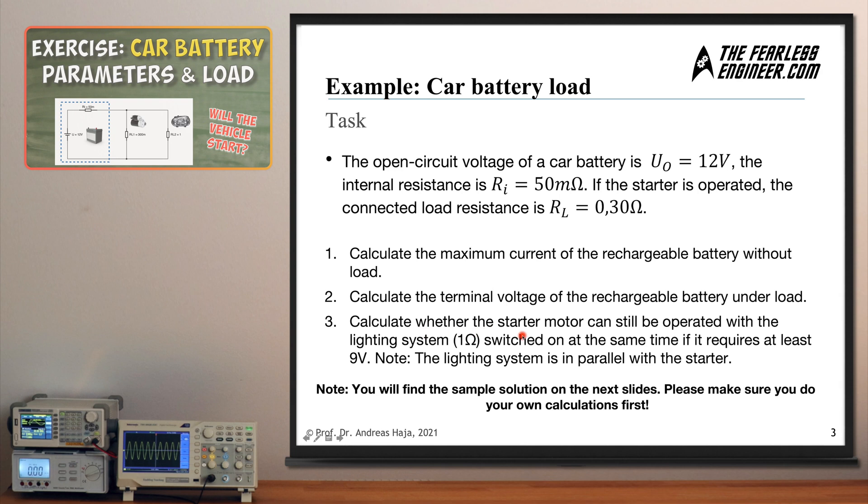Then thirdly calculate whether the starter motor can still be operated with the lighting system switched on in addition to the vehicle starter, and this is given with one ohm of resistance. And please take note of the fact that the starter requires at least an operating voltage of 9 volts. So you need to find out whether the starter motor still works because it needs 9 volts to start and when the lighting system is also switched on then this might take away some voltage from the battery.